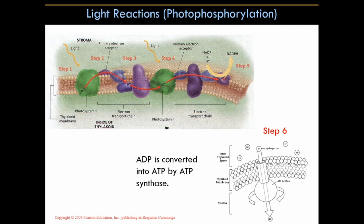Those H+ ions, trying to create equilibrium, eventually reach the enzyme ATP synthase. They can't pass through the phospholipid bilayer due to the lipids. Hydrogen ions pass through ATP synthase, which turns and converts ADP into ATP. It's very similar to the electron transport chain in mitochondria or the cell membrane of bacteria. The overall goal is the same: the end product needs to be ATP, because that's what all cells are after.